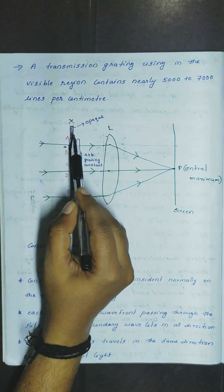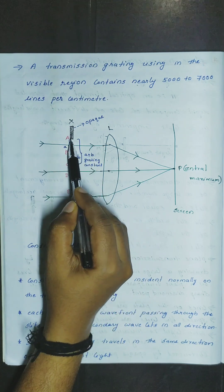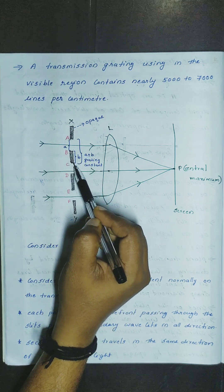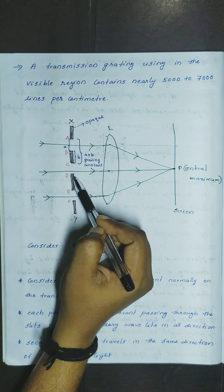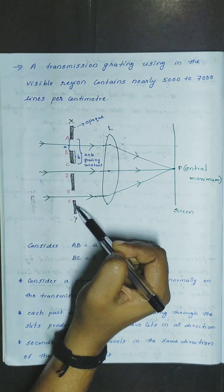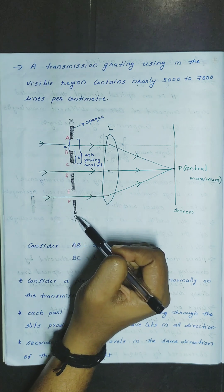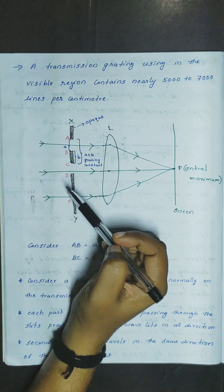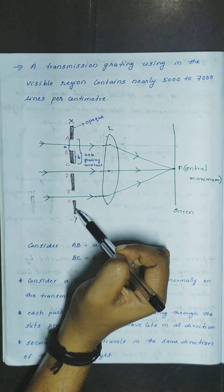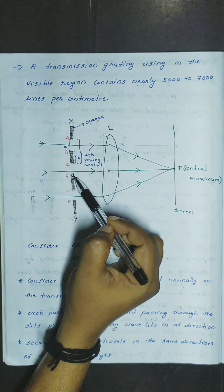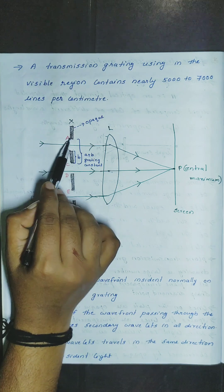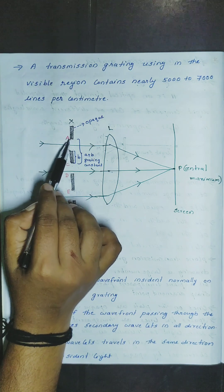In a transmission grating, the region can be transparent or opaque. This region is opaque to light.